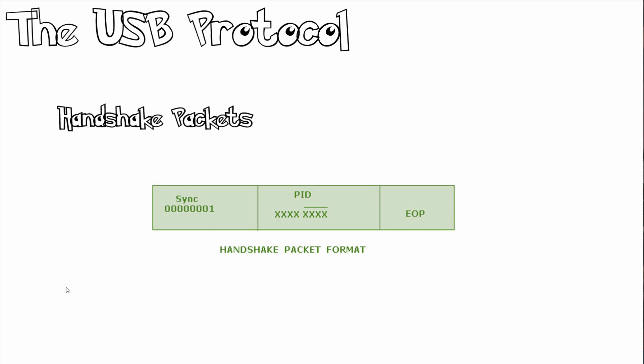Handshake packets consist of a PID byte — Product Identification — and are generally sent in response to data packets. The three basic types are: ACK (acknowledge — data successfully received), NAK (not acknowledge — data cannot be received at this time and should be retried), and STALL (device has an error and will never transfer data until corrective action is performed). USB 2.0 adds two additional handshake packets: NYET (split transaction not yet complete) and ERR (split transaction failed). The only handshake the host may generate is ACK.